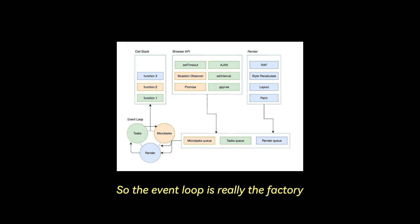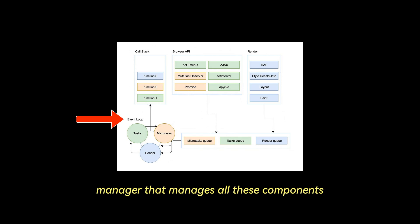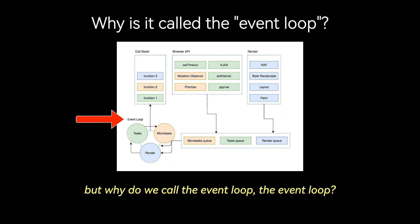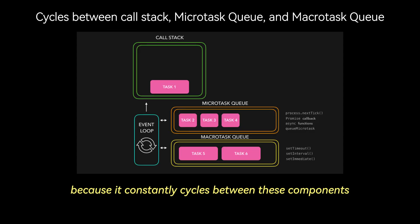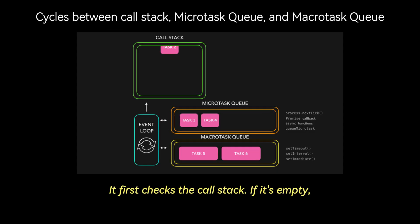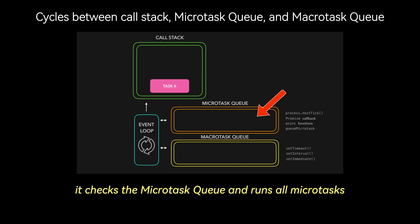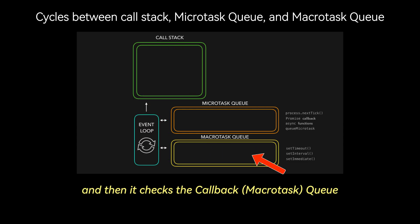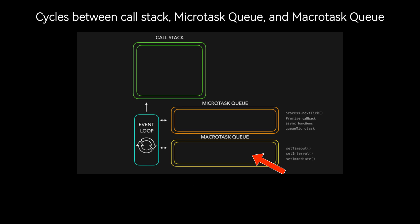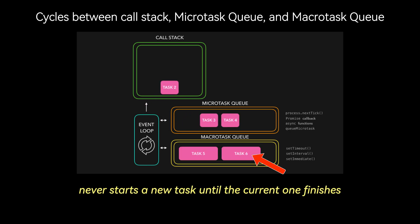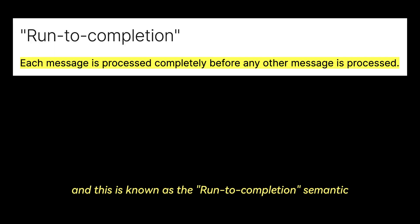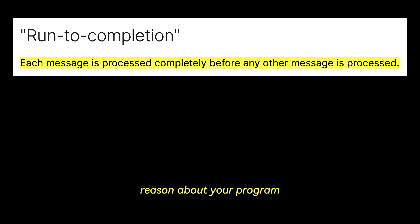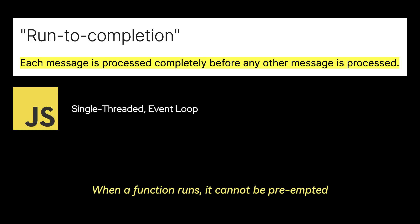The event loop is really the factory manager that manages all these components. It's called the event loop because it constantly cycles between them: it first checks the call stack; if it's empty, it checks the microtask queue and runs all microtasks; then it checks the callback queue and runs the next callback. The event loop ensures that JavaScript never starts a new task until the current one finishes — this is known as the run-to-completion semantic. When a function runs, it cannot be preempted and will run entirely before any other code runs.